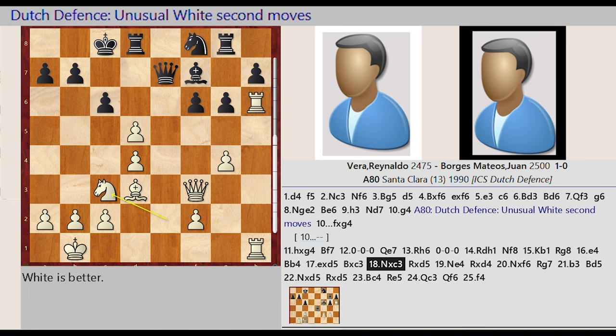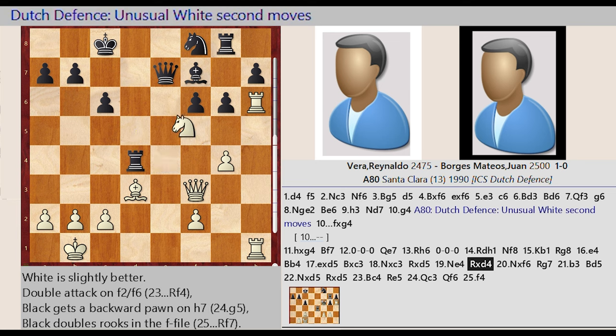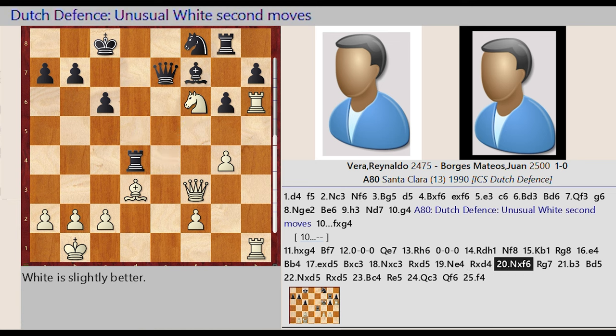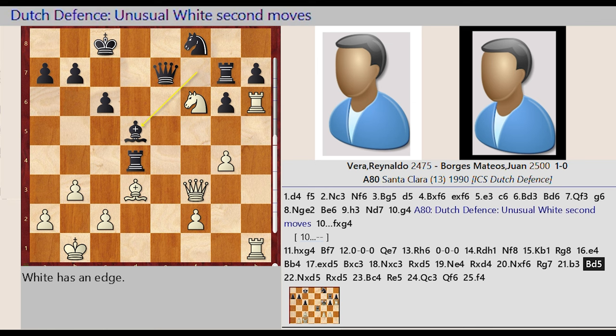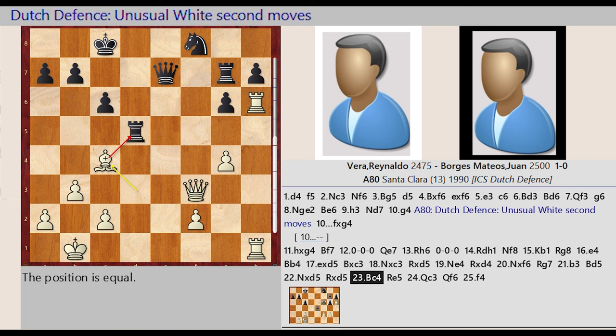Rook D8 takes on D5, Knight C3 E4, Rook D5 captures D4, Knight E4 captures F6, Rook G8 G7, B2 B3, Bishop F7 D5, Knight F6 captures D5, Rook D4 captures D5, Bishop D3 C4, Rook D5 E5, Queen F3 C3.